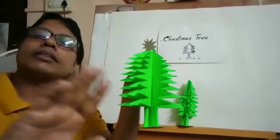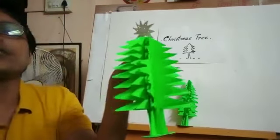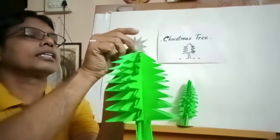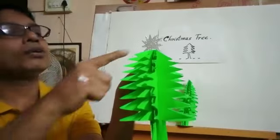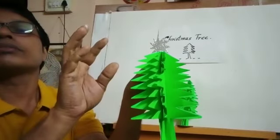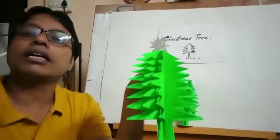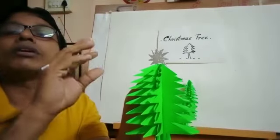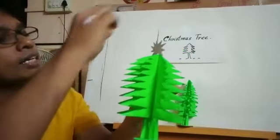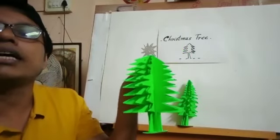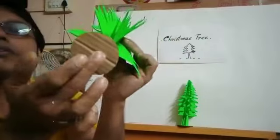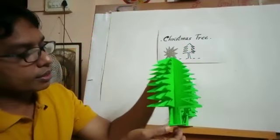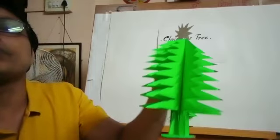Students, see this is a complete Christmas tree. You can put a golden or silver star here — ready-made or you can cut and make one that looks like a star. Keep it with adhesive. You have to make this type of round shape and then you can keep it anywhere. This is a complete one.